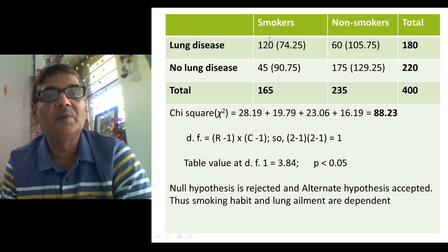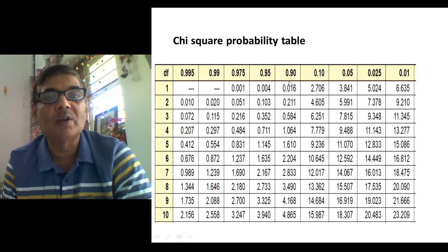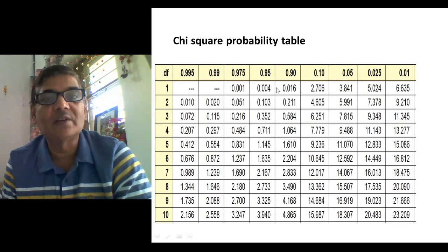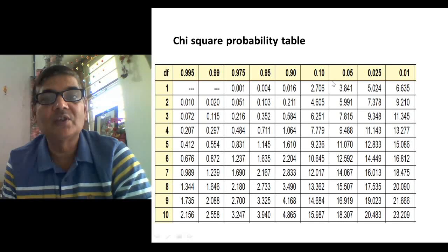There is dependency between smoking habit and lung ailments or lung disease. In this table, you can see the chi-square probability values — at one degree of freedom, the value at the 5% level is 3.84. If the table value is less than the calculated value, you reject the hypothesis. If the calculated value is less than the table value, you accept the null hypothesis.